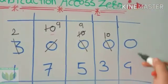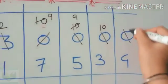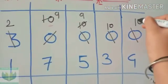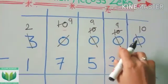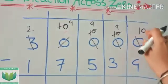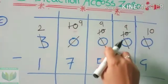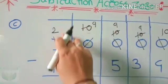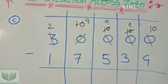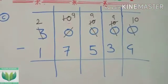Again 0 minus 4 is not going, so we have to take 1 from the 10. Now here becomes 9. So 0 becomes 10, 0 becomes 9, 0 becomes 9, 0 becomes 9, and 3 becomes 2. Now it is easy to do subtraction.